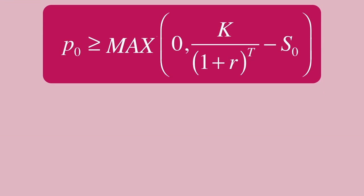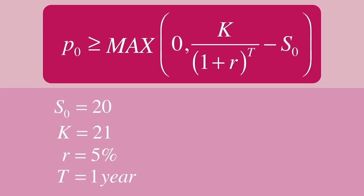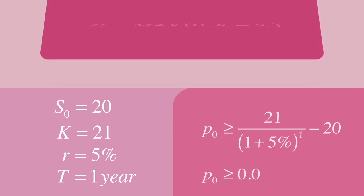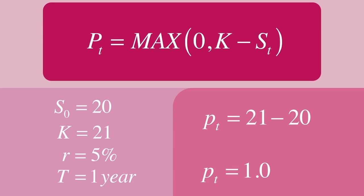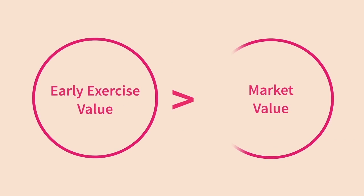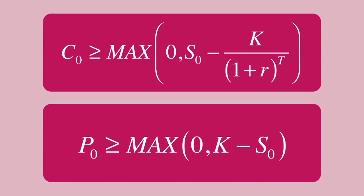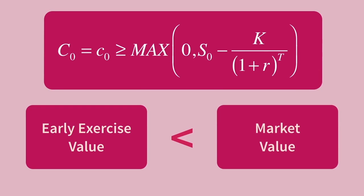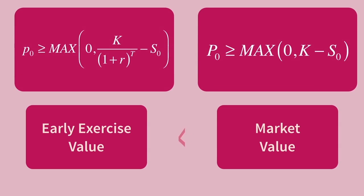Looking at a put option: the current spot price is 20 and the strike is 21. The option's value is given by 21 divided by 1.05 minus 20, which equals 0. But if this were an American option exercised early, the exercise value is 21 minus 20, or 1.0 — greater than its market value. So for American options we have specific expressions for minimum value: American and European options have the same value at expiration; American call options often have early exercise value less than market value; and American put options can benefit from early exercise.